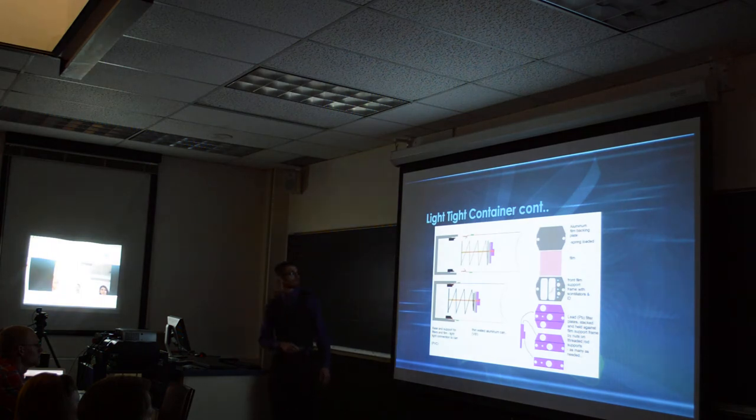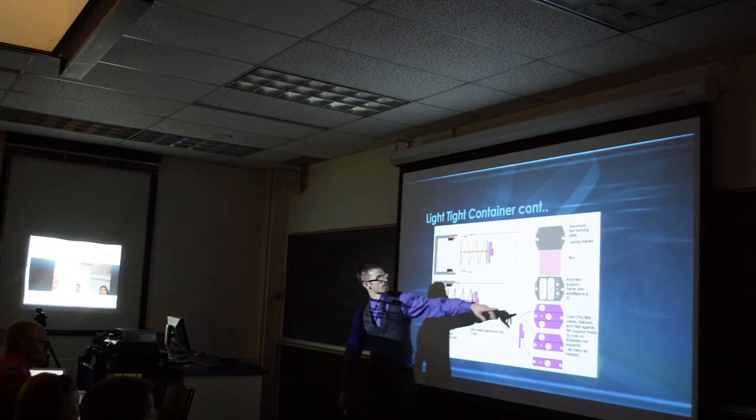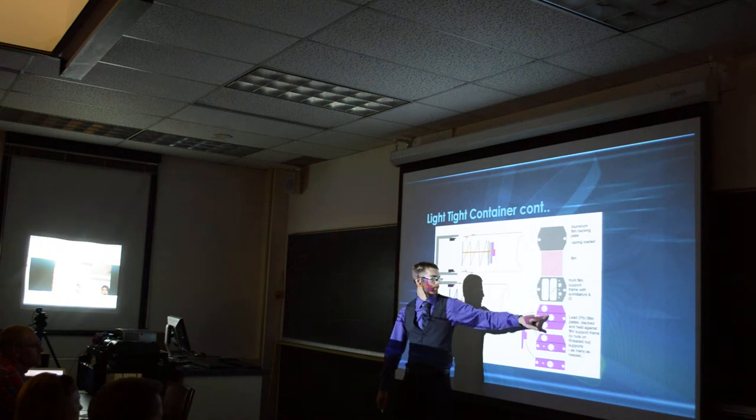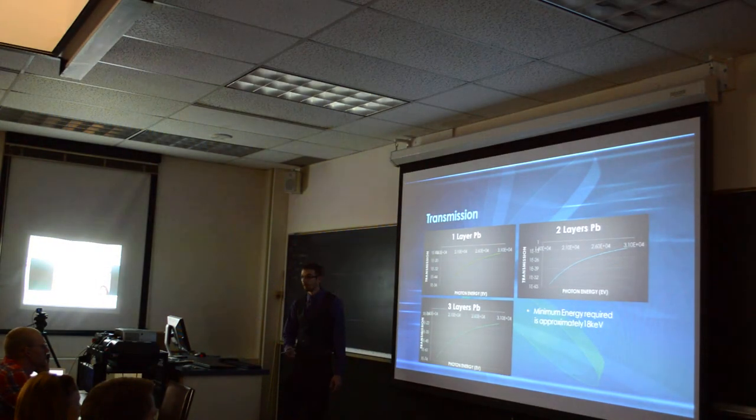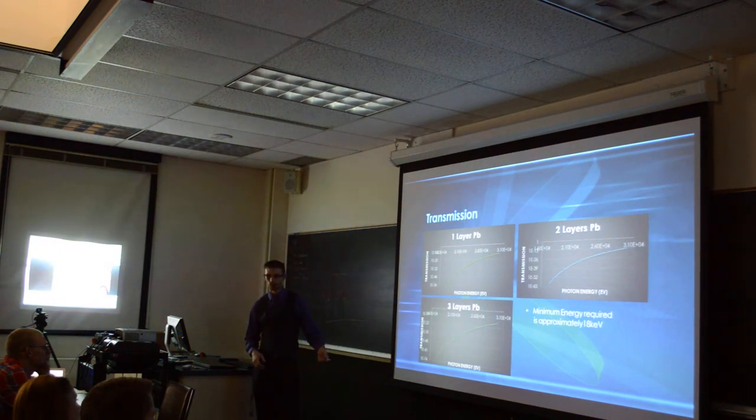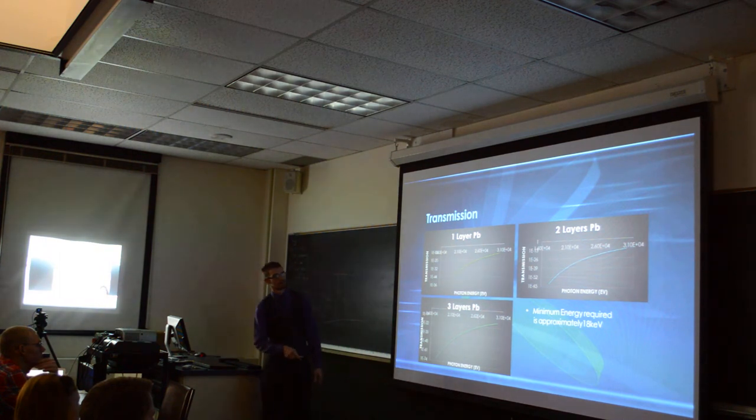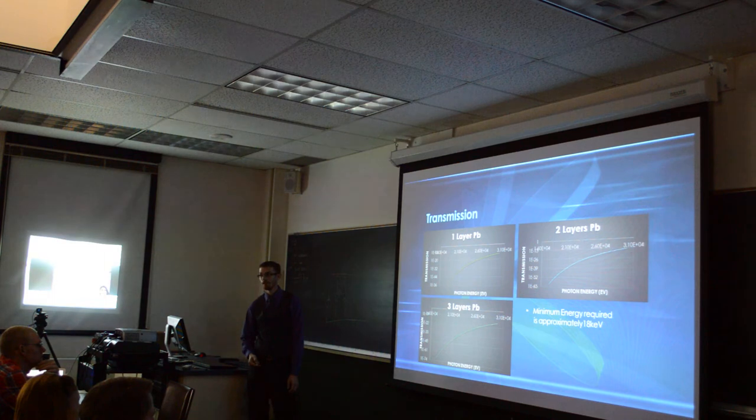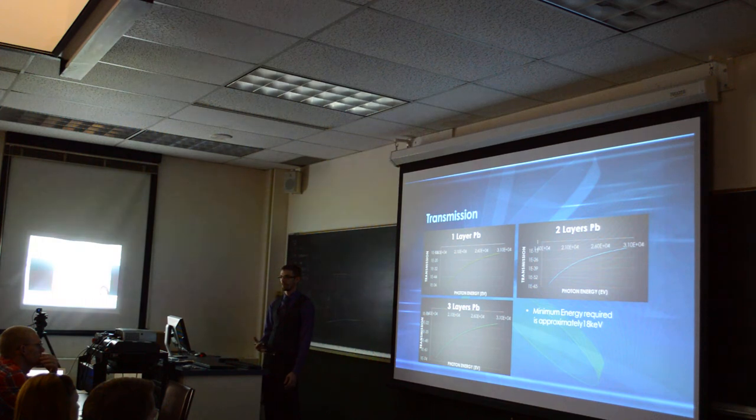This was a diagram of the canisters. As you can tell, we have the layers right here, the lead layers, and then the holder for the scintillators. This is the through hole for the actual holes that the lead shielding had in it, and then the film is in the aluminum plate. This is the transmission through the actual hole of the vacuum container, and then through the aluminum can, and then through each layer of lead. As you can tell, this is a lin-log plot. Our minimum energy requirement through one layer of lead is going to be at least 18 keV.